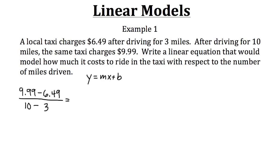Now let's just simplify this. On top 9.99 minus 6.49 gives us 3.50 or 3.5. And then that's going to be divided by 10 minus 3 which is 7.